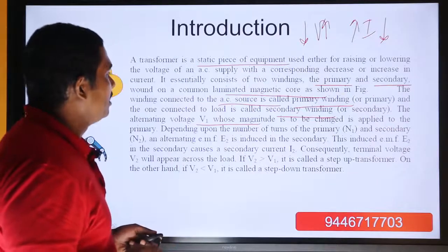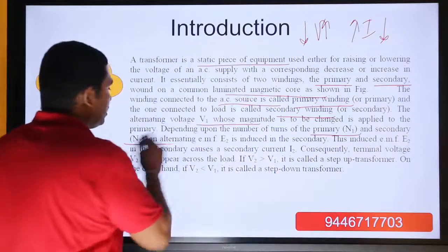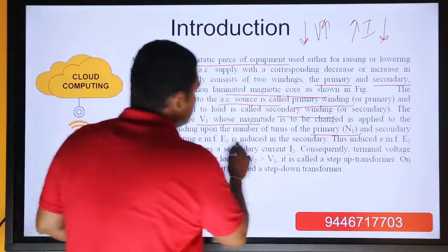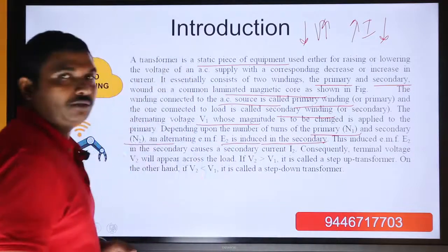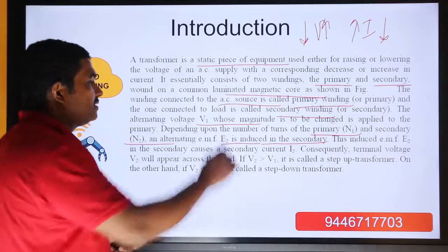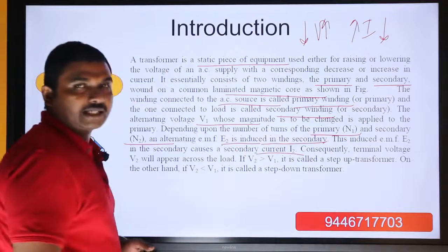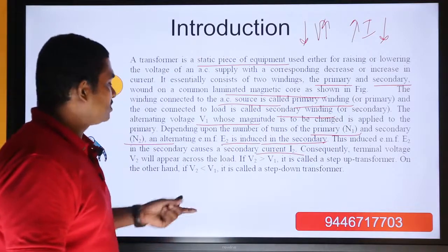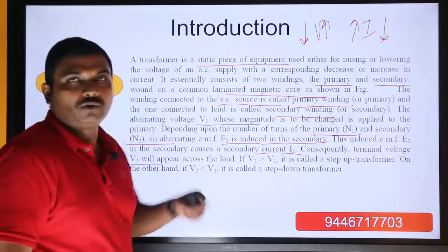The primary has N1 number of turns and the secondary has N2 number of turns. An induced EMF E2 is generated in the secondary. This E2 causes a secondary current I2 because the secondary circuit is closed with a load connected. Consequently, we get a terminal voltage V2 across the load.